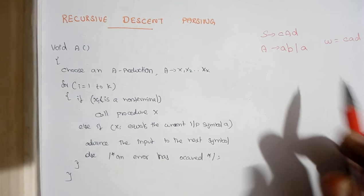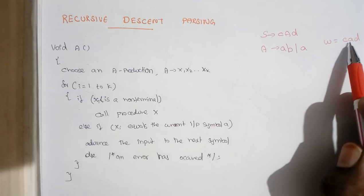Consider a production like this: s tends to c a d, and a tends to a b or b. If we are deriving a parse tree using recursive descent parser, the input we consider is c a d.